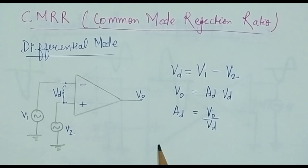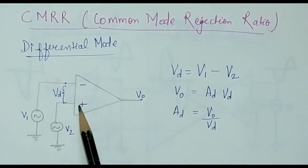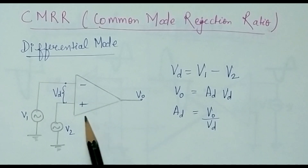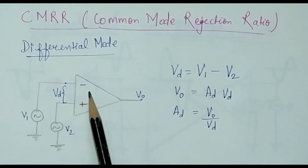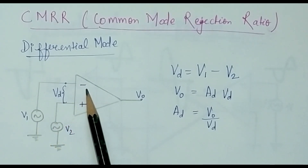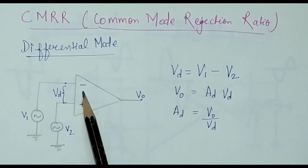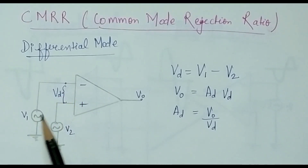Today we will see in how many modes this operational amplifier can work. This is the first diagram, known as the differential mode of operation. If you see the diagram carefully, this is a double-ended input, and I am giving two different voltage sources to both the input terminals — V1 to the inverting terminal and V2 to the non-inverting terminal.